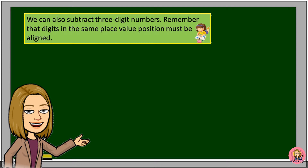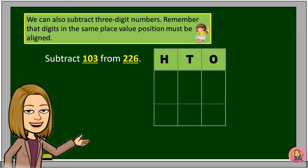We can also subtract 3-digit numbers. Remember, the digits in the same place value position must be aligned. Let's try to subtract 103 from 226. This is our place value chart. For 226: 6 is in the ones place, 2 is in the tens place, and 2 is in the hundreds place. For 103: 3 is in the ones place, 0 is in the tens place, and 1 is in the hundreds place.